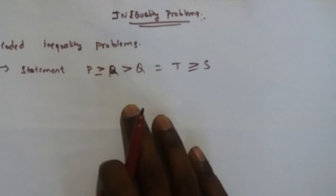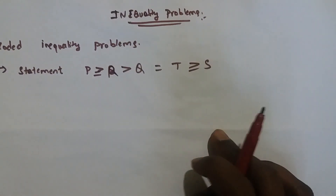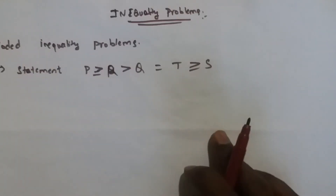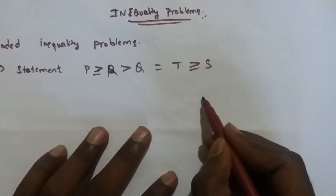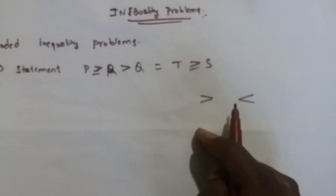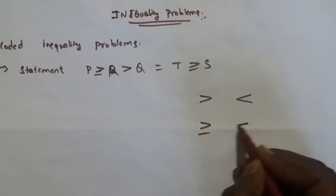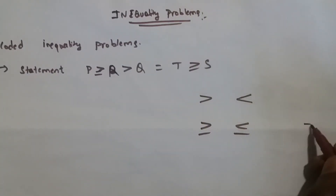To find the coded inequality problems, there are key formulas. Using these formulas we can find coded inequality problems easily. The formulas involve: greater than, less than, greater than or equal to, less than or equal to, and equal to.